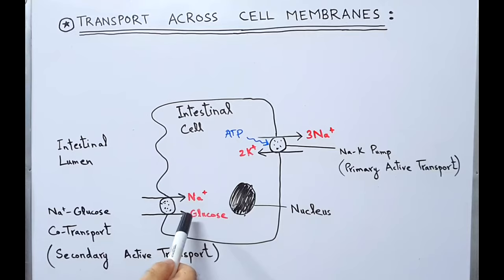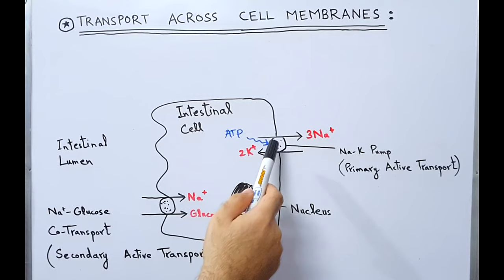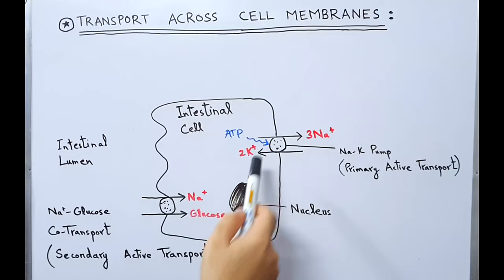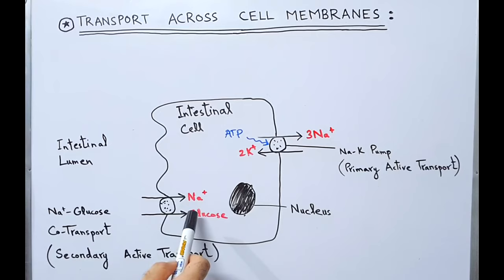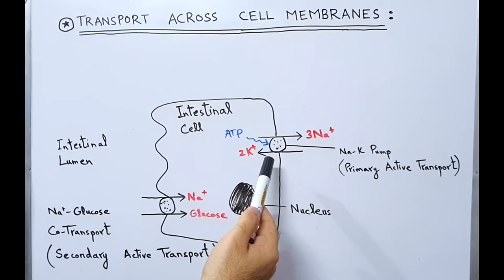Also shown is sodium-glucose co-transport, in which sodium moves downhill along the concentration gradient to move glucose from the lumen into the cell against the concentration gradient. Sodium can move downhill only because the sodium-potassium pump is working, maintaining the sodium gradient. This sodium-glucose co-transport is called secondary active transport because it is secondary to primary active transport. If the primary active transport fails, the secondary active transport will be stopped as well.